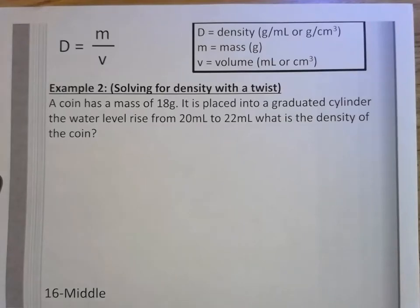We're going to continue solving for density. This problem is in the middle of page 16 in your notebook. I still have the formula here listed for you, but it's at the top of your page. D equals M over V is the formula to solve for density. The capital D stands for density. The units are grams per milliliter or grams per centimeter cubed. The lowercase m stands for mass, usually measured in grams, and the V stands for volume, measured in milliliters or centimeters cubed.